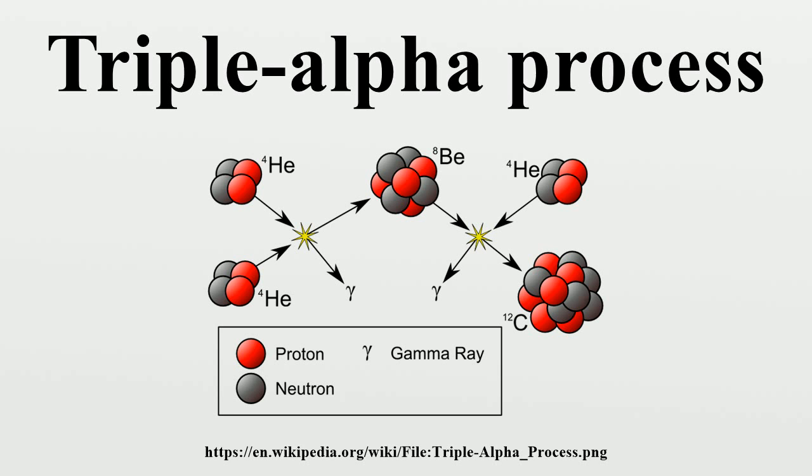Conversion of 12C plus 4He to 16O is much more difficult than the production of carbon. No resonance exists for this reaction. Were this not true, insufficient carbon would exist in nature.